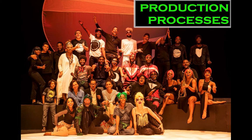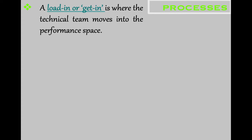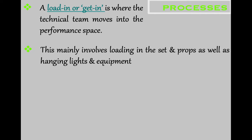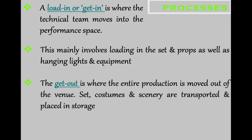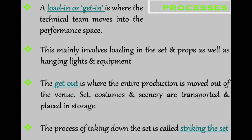Now looking at production processes — the things you do on the way to show night. A get-in or load-in is where, a few days or a week before the performance, you move from your rehearsal space into the performance space. It mostly involves moving the set and props in and hanging the lights and equipment. On the opposite end, a get-out is where you move everything out afterwards — putting things in storage, striking the set, taking down the lights, and clearing the actors from the space. The process of taking down the set is called striking the set.